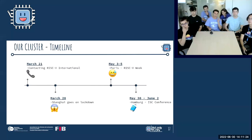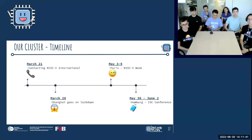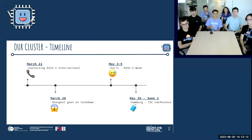Getting our cluster was quite an adventure. On March 21st we contacted RISC-V International, who put us in touch with the Shanghai StarFive team to arrange a cluster. But a week later, on March 28th, Shanghai went into lockdown due to COVID-19, making logistics completely unfeasible. Two months before the competition, we were left without a cluster.